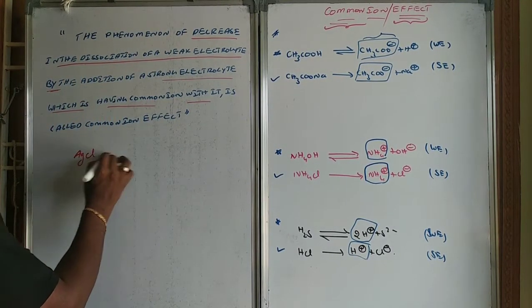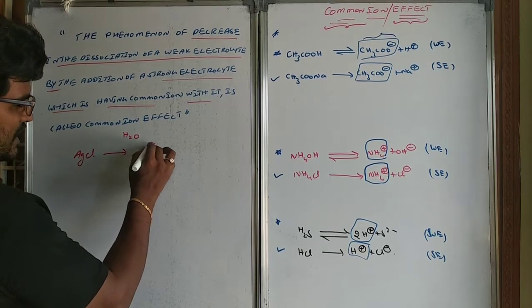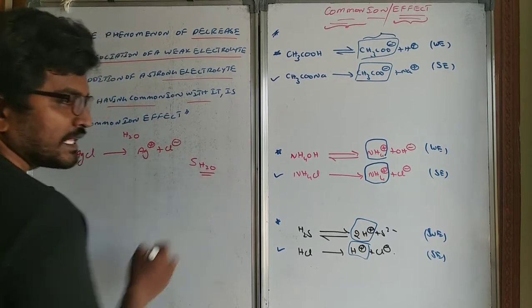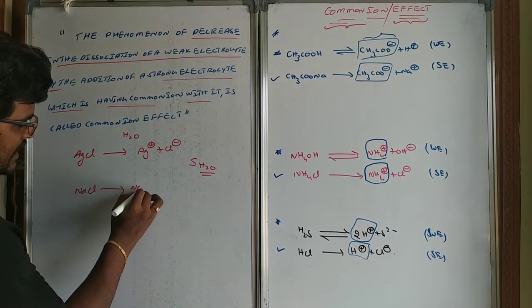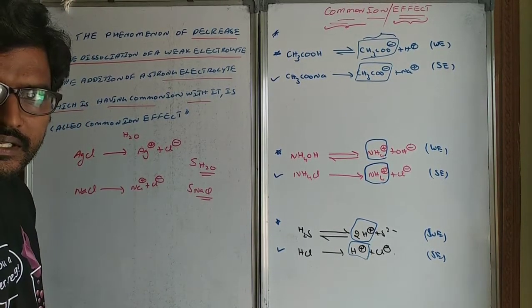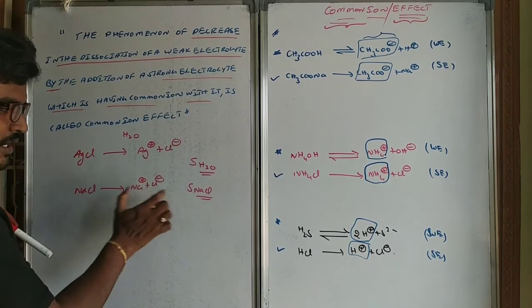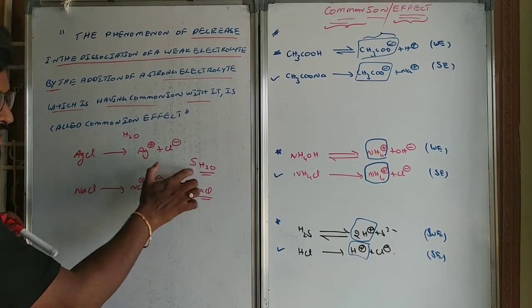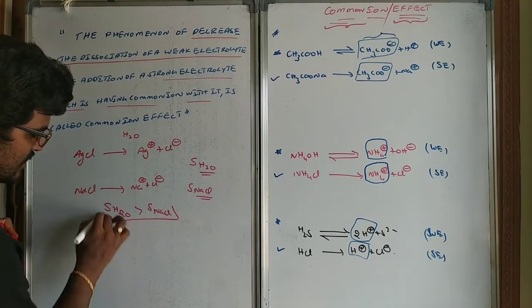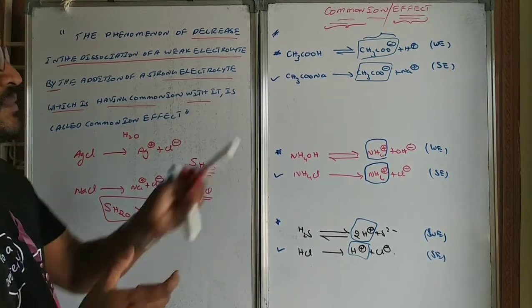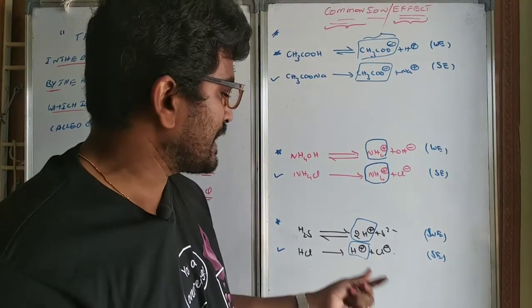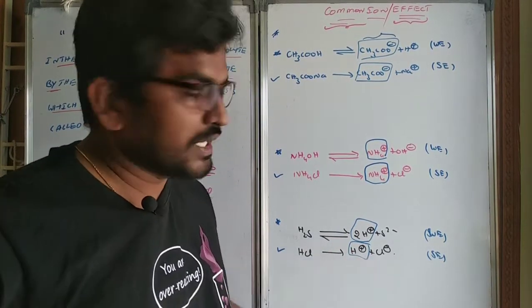Let us say when AgCl is dissolved in water, it will dissociate into Ag⁺ and Cl⁻, and it will have a certain solubility in water. If you dissolve the same AgCl in presence of another compound sharing a common ion, the solubility will be less because of the common ion. If there is no common ion, solubility is more. So solubility in presence of water is greater than solubility in presence of a common ion source. In the group analysis of cations, this is the best example to study.